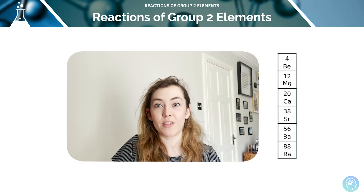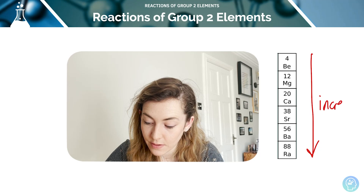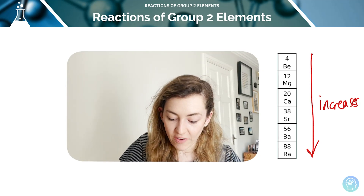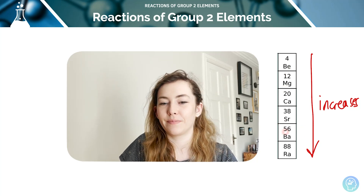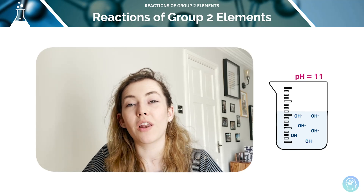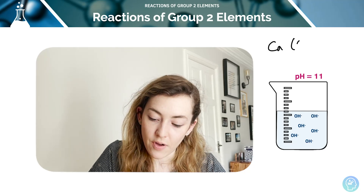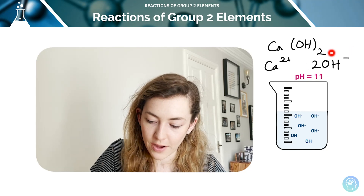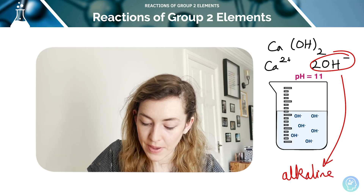As we move down group 2, the reactivity with water increases. Beryllium is not very reactive at all, magnesium reacts very slowly, but barium reacts very rapidly. If the resulting hydroxide is soluble and dissolves in water, it gives an alkaline solution. Hydroxides are alkaline because they dissociate — for example, calcium hydroxide dissociates into Ca²⁺ and two OH⁻ ions, increasing the pH of the solution.